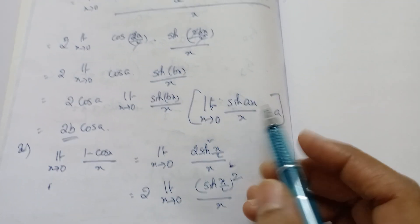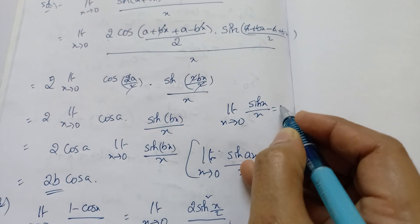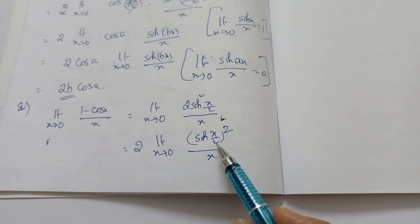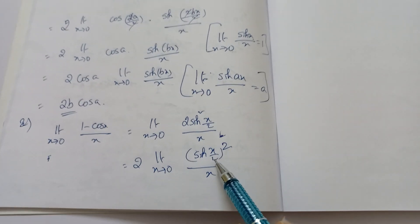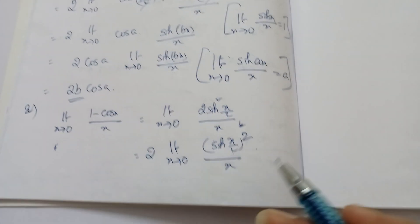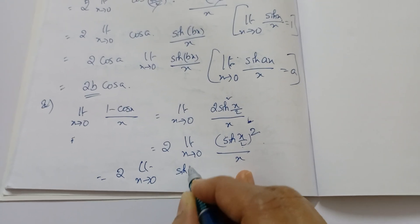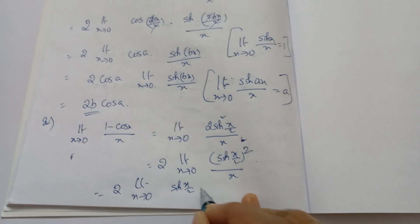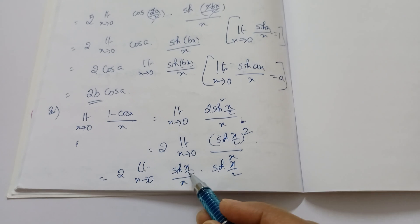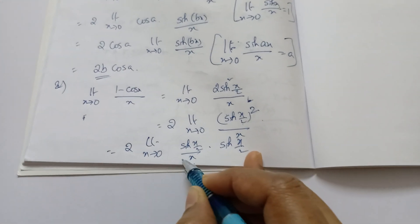Now, sin²(x/2) means sin(x/2) · sin(x/2). The formula is lim sin(x)/x = 1 — whatever angle is in the numerator, the denominator must have the same term. Here we have x/2 in the sine, but x in the denominator — they don't match. That's why I need to multiply and divide by x/2 to make the angle match.